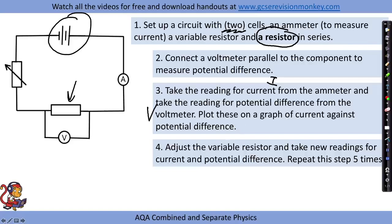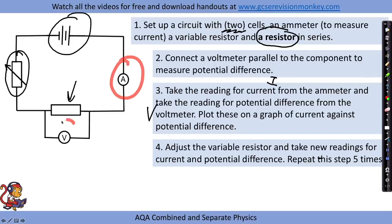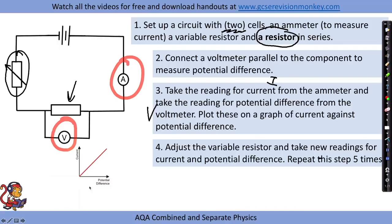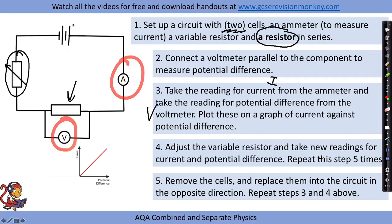We then adjust the variable resistor and take new readings for current and potential difference, repeating this five times. This gives us five sets of readings from the ammeter and five from the voltmeter, providing a wide range of data. Up to this point we can draw the positive region of the graph, plotting current and potential difference and drawing a line of best fit. However, we also need the negative region of the graph.